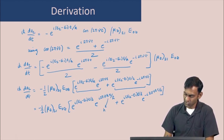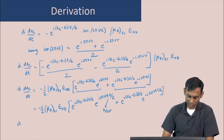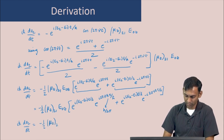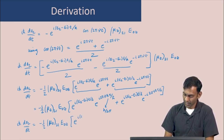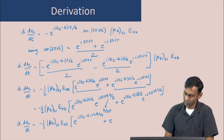Using h-bar equals h/(2π) to simplify, we get: i-h-bar · da2/dt equals minus (1/2) · mu_z(2,1) · E0z times [exp(i(E2−E1+hν)t/h-bar) + exp(i(E2−E1−hν)t/h-bar)].